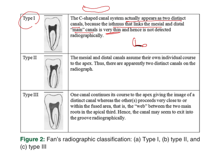Type 2 is where the mesial and distal canals assume their own individual courses to the apex. Thus they are apparently two distinct canals on the radiograph, meaning you have your distal canal and your mesiobuccal and mesiolingual — they give a very normal appearance.